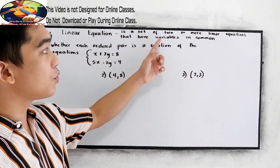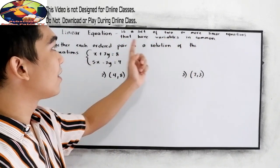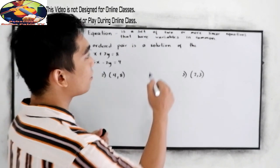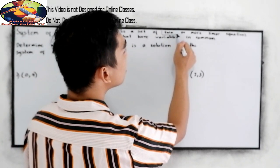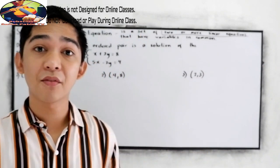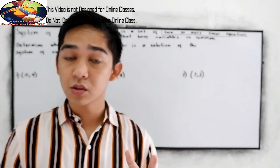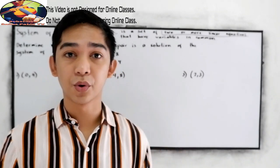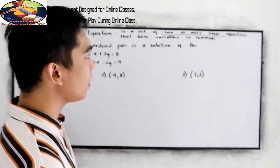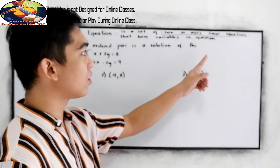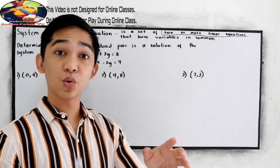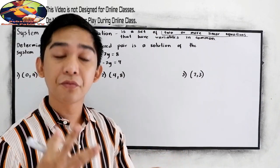A system of linear equations is a set of two or more linear equations that have variables in common. Notice that we can have two equations, three equations, or more. And since these are linear equations, you will also be encountering two variables or three variables.